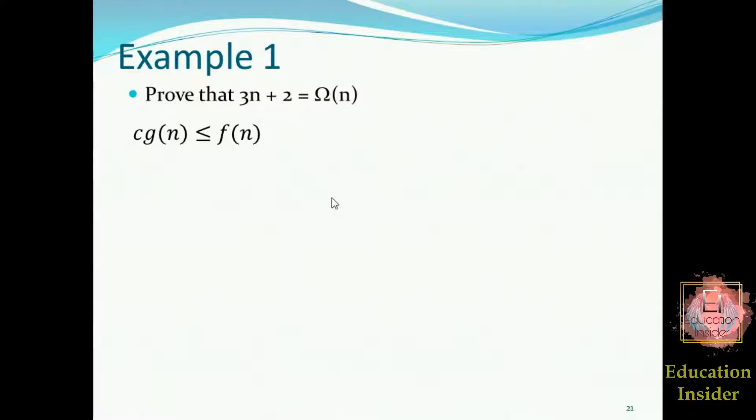But observe that this inequality is now reversed than that of Big O because here we need to prove lower bound of the function. Okay, so far so good. Let's populate the values of f(n) and g(n). Now let us apply some algebraic rules to it.